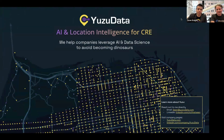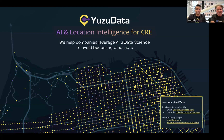I'll do a quick introduction to UZData. We are AI and location intelligence for commercial real estate. Our tagline is that we help companies leverage AI and data science to avoid becoming dinosaurs. The story behind that: I was on a call with someone in the commercial real estate space, and she said she was really worried that her company was going to become a dinosaur because of everything happening with location data and AI. After I got off that call, I immediately went to my website and changed the text to say 'we help companies leverage AI and data science to avoid becoming dinosaurs.'